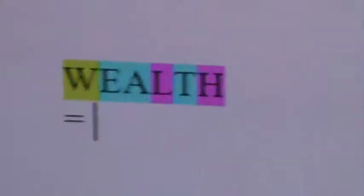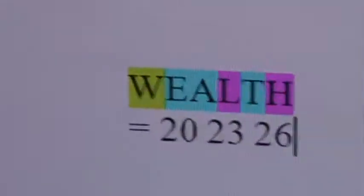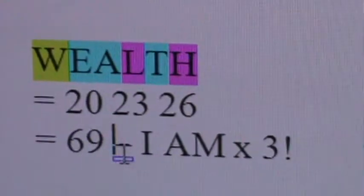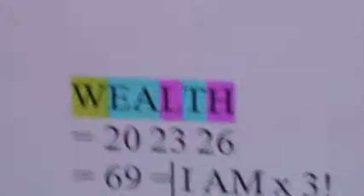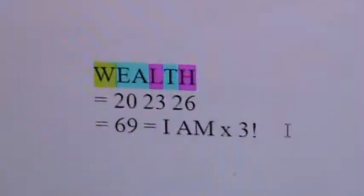So flawlessly, wealth equals 20, 23, 26 which equals 69 equals I am times 3. Okay, excuse me, this should be an equal sign. Which equals Jehovah.